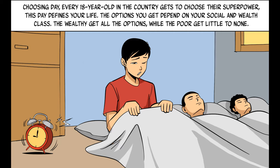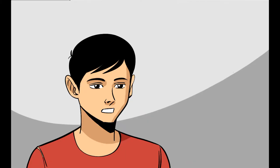Every 18 year old in the country gets to choose their superpower. This day defines your life. The options you get depend on your social and wealth class. The wealthy get all the options while the poor get little to none.